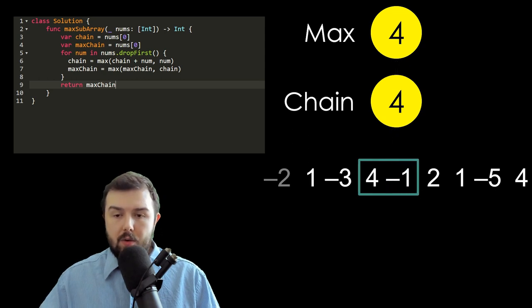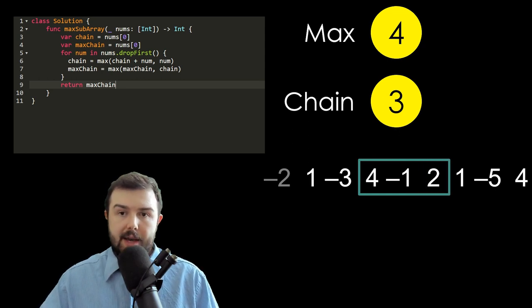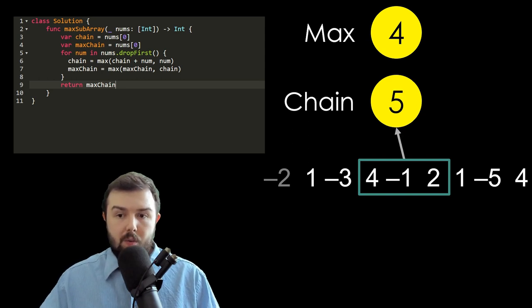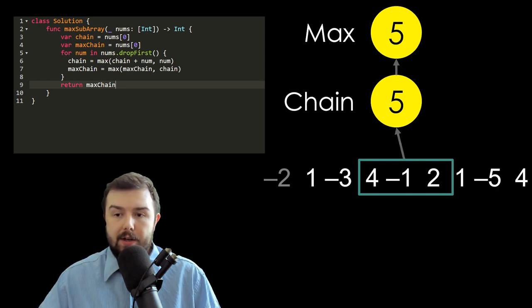So our maximum value now is four. When we go to expanding our window, now our chain is three. Three is lower than four, so we don't modify our maximum. But when we expand further, we see that the chain becomes five. Five is greater. We do the same operation. It becomes six.